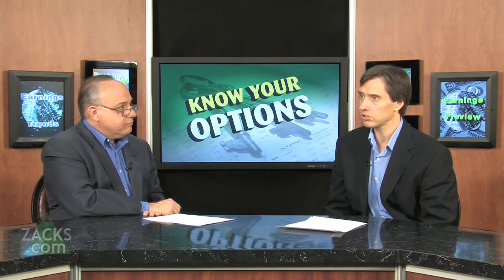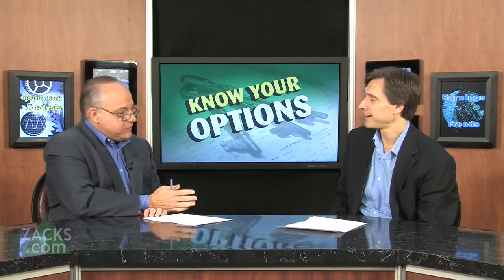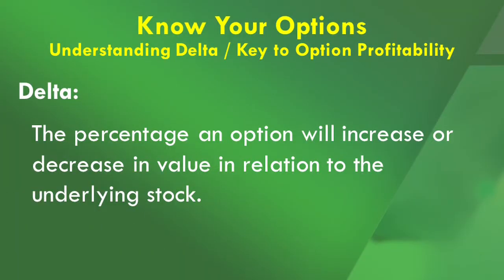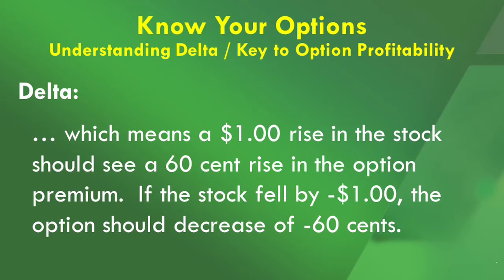Delta is a way to measure how much your option will increase or decrease based on the movement of the underlying stock. The definition: Delta is the percentage an option will increase or decrease in value in relation to the underlying stock. A Delta of 0.6 or 60% means the option will move equal to 60% of the underlying stock's price change. If the stock rises by $1, the option should see a $0.60 rise in premium; if the stock fell by $1, the option would decrease by roughly $0.60.